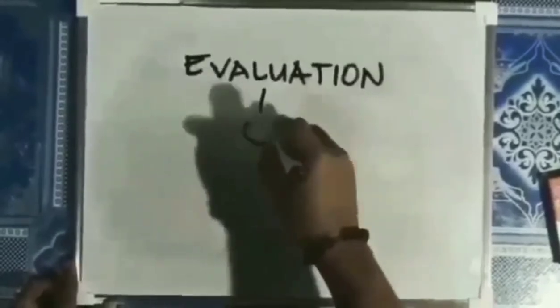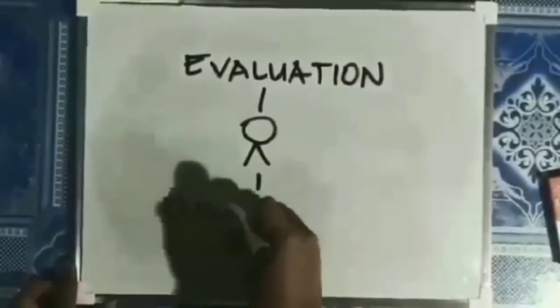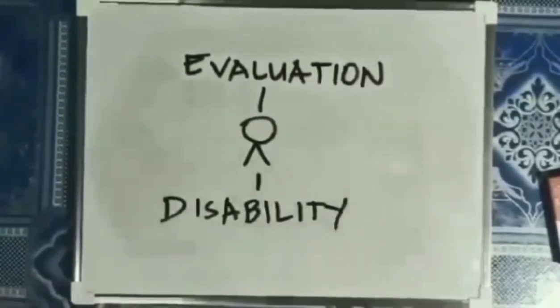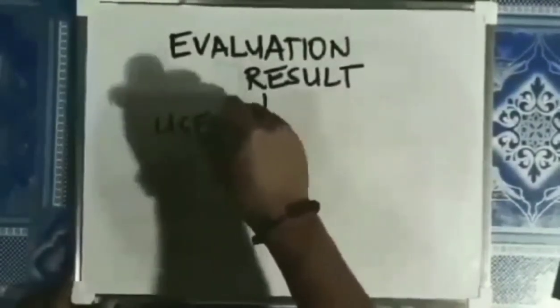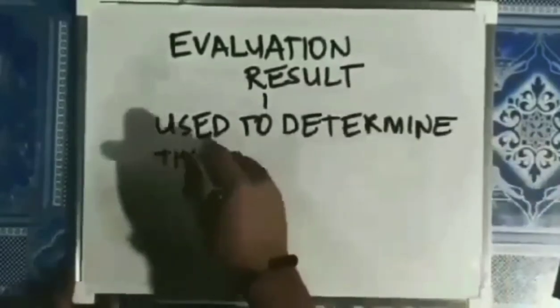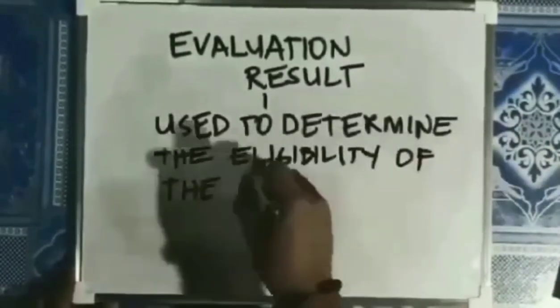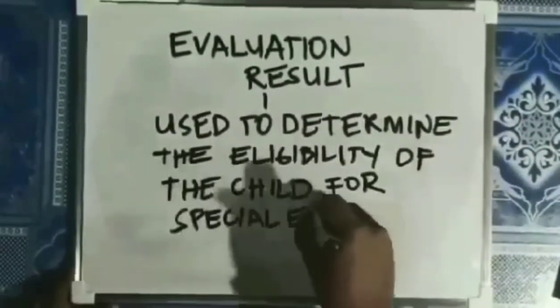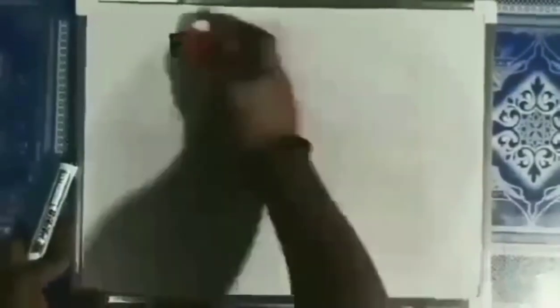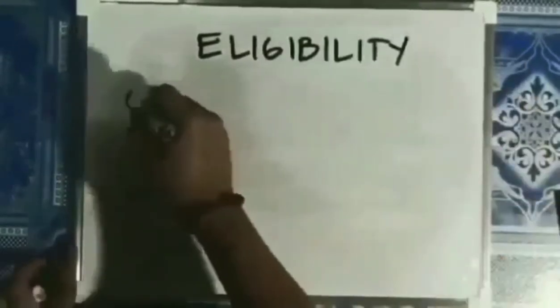The evaluation must assess the child in all areas related to the child's suspected disability. The evaluation is used to determine the eligibility of the child for special education. A child must meet the criteria.